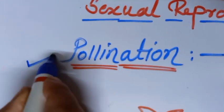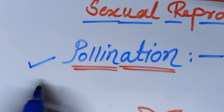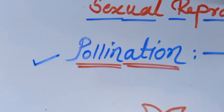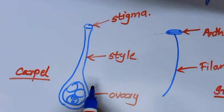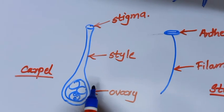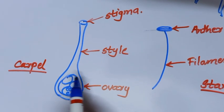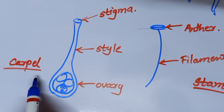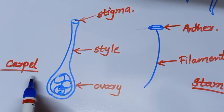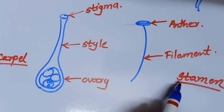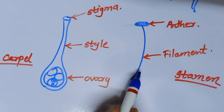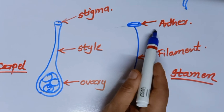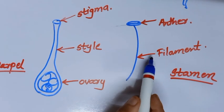The first process in the sexual reproduction of plants is pollination. In pollination, there are 2 reproductive organs of the flower. One is carpel and another is stamen. The carpel is the individual unit of the gynoecium and the stamen is the individual unit of the androecium. In the stamen, 2 parts are there: one is anther and another is filament.